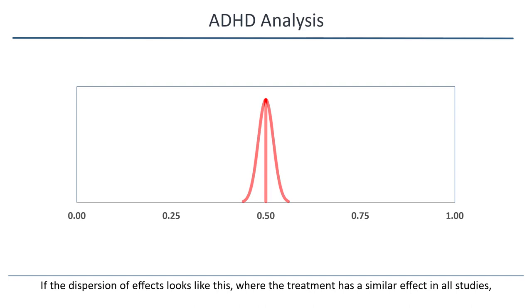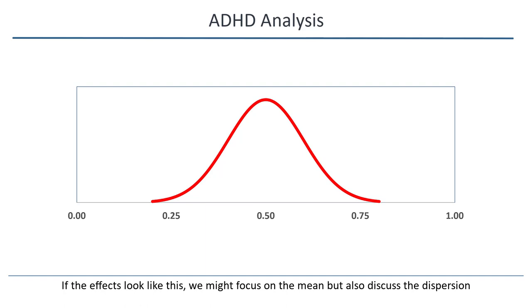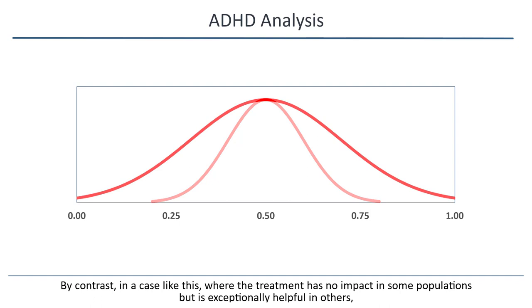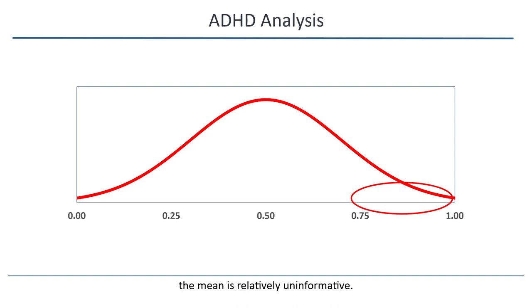If the dispersion in effects looks like this, where the treatment has a similar effect in all studies, it would make sense to focus on the mean. If the effects look like this, we might focus on the mean, but also discuss the dispersion. By contrast, in a case like this, where the treatment has no impact in some populations but is exceptionally helpful in others, the mean is relatively uninformative. The focus should be on the range of effects.